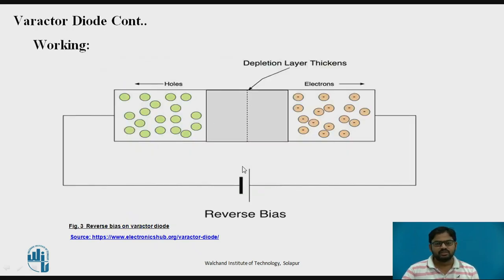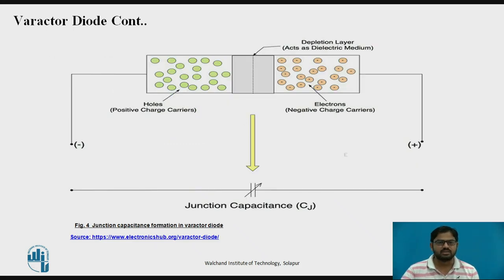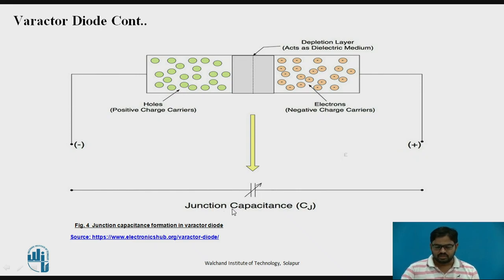The Varactor Diode works under reverse bias. When reverse bias is applied, it creates a space charge region or depletion region at the center, with mobile charges at the ends. These mobile charges are separated by the depletion region, forming a capacitance. As the reverse bias changes, the capacitance changes. The P side has holes as majority carriers and the N side has electrons, and this is modeled as a junction capacitance, also called transition capacitance.